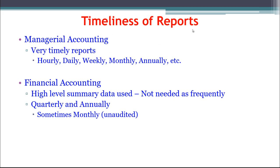Next, let's look at the timeliness of reports. Financial accounting provides high-level summary data for the entire company. Investors don't need this as frequently, so we're generally talking quarterly and annually. Publicly traded companies are required to submit quarterly and annual reports, and annual reports must be audited by an external entity. Occasionally you might see unaudited monthly data on a corporate website.